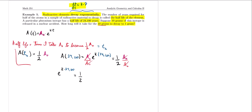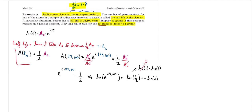With this information we can figure out the k value. Taking the ln of both sides: ln(e^(24100k)) = ln(½). Now the ln of ½ can be rewritten as ln(1) − ln(2), and since ln(1) = 0, the ln of ½ equals negative ln of 2. So 24,100·k = −ln(2), giving us k = −ln(2)/24,100.